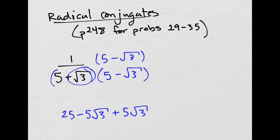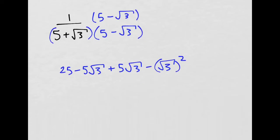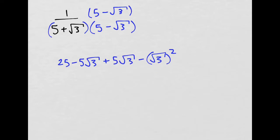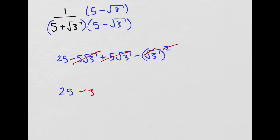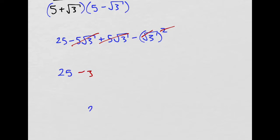And then the square root of 3 times 5, that's just positive 5 times the square root of 3. And then square root of 3 times negative square root of 3, well that's negative square root of 3 squared, isn't it? So that means, what do I have? I have 25, this and this cancel out because they're exactly the same except they have opposite signs. So I just have minus 3. That's great. 25 minus 3, that's 22.